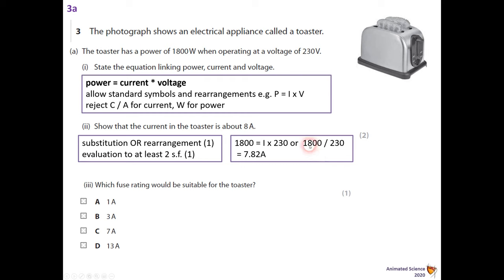Which would also, you could go for 1800 over 230, and that would equal 7.82 amperes. Last part here: which fuse rating would be more suitable for the toaster? So you've got a number of choices and let's see what they said.